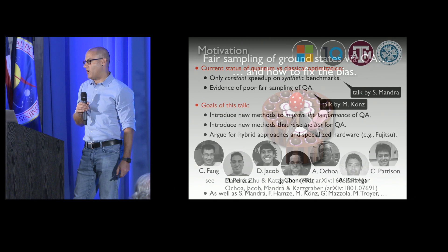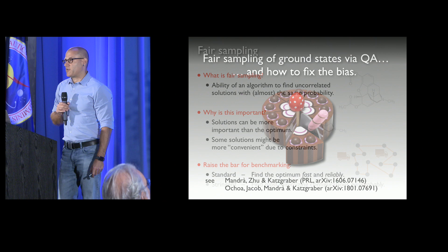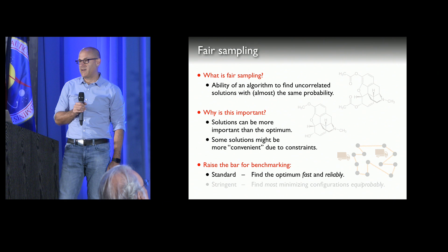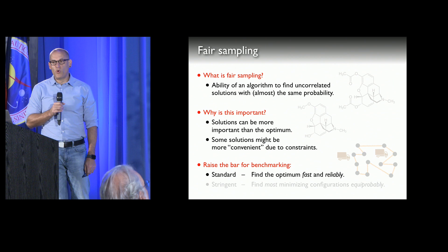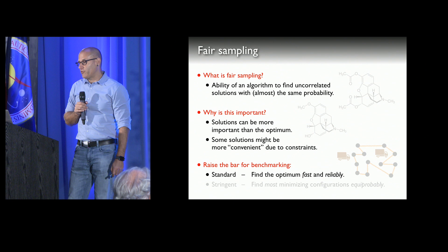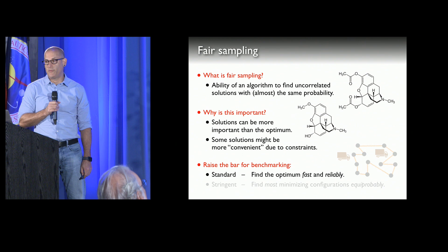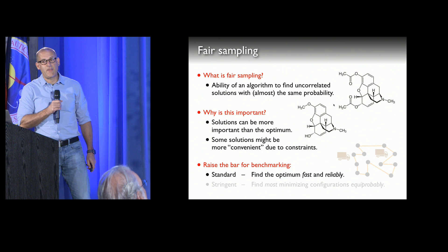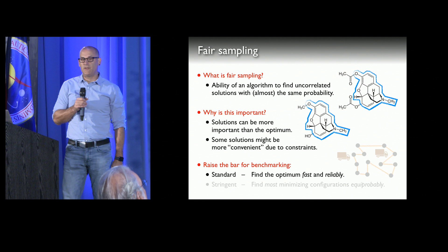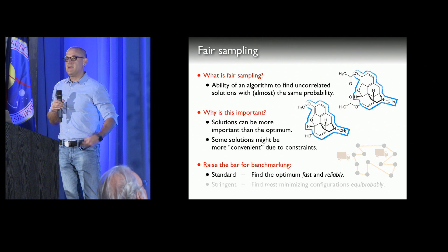Let me reiterate what I mean by fair sampling. Fair sampling in a simple definition is the ability of an algorithm to find uncorrelated solutions hopefully with almost the same probability. This is very important because there are many applications that directly depend on sampling. First of all, solutions can be more important than the optimum, and a simple application for this is the molecular similarity problem in chemistry.